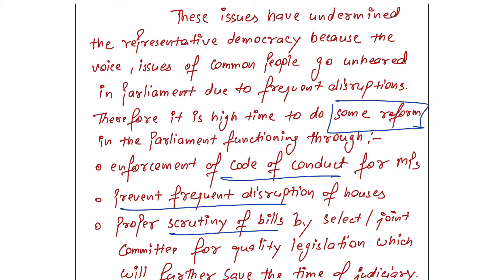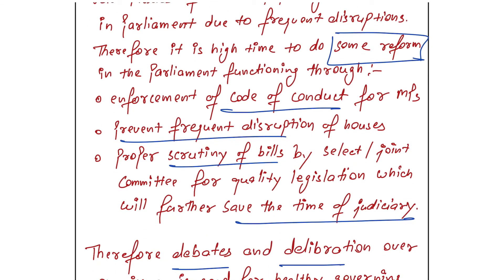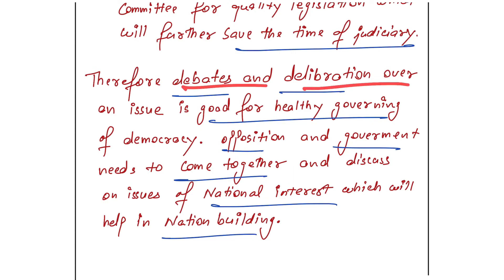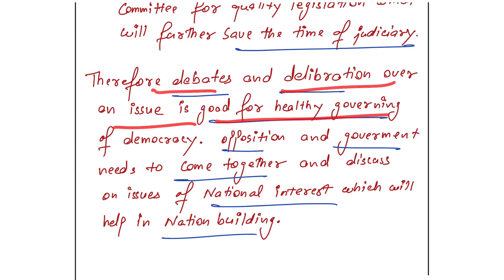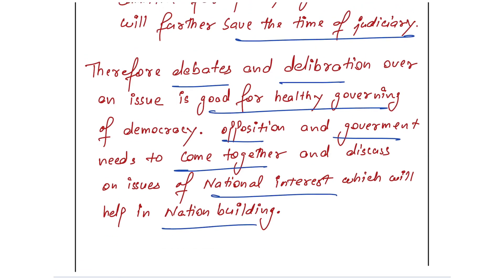Highlight the reforms in brackets so the examiner can easily see them. Reforms include: enforcement of code of conduct for MPs in parliament, prevention of frequent disruption, and proper scrutiny of bills by referring them to select or joint committees — which will further save the judiciary's time. Therefore, debates and deliberation over issues are good for healthy governance of democracy. Opposition and government need to come together and discuss issues of national interest — use balanced language, not strong language — which will help in nation building. This is the essay in 300 words.